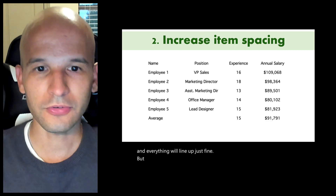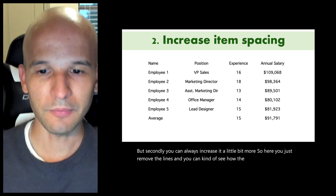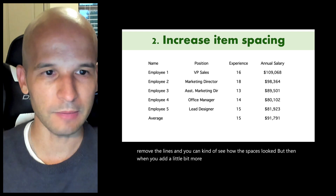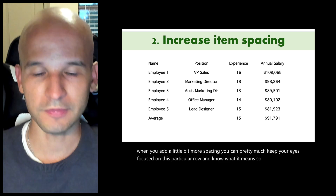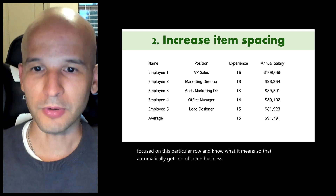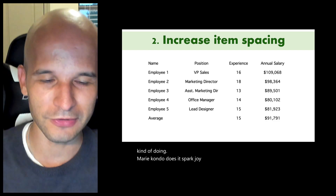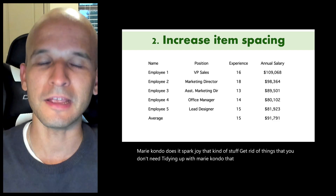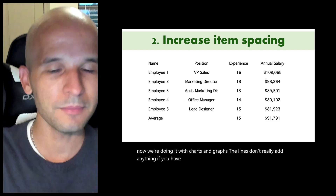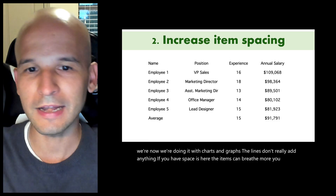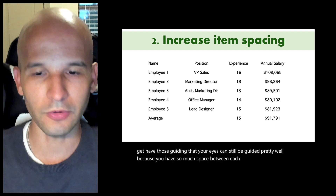Secondly, you can increase the spacing a little bit more. When you remove the lines and then add a bit more spacing, you can keep your eyes focused on a particular row and know what it means — that automatically gets rid of some busyness. One common theme here is we're doing Marie Kondo — get rid of things you don't need. The lines don't really add anything. If you have spaces, the items can breathe more and your eyes can still be guided well.